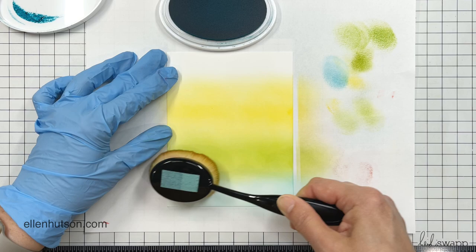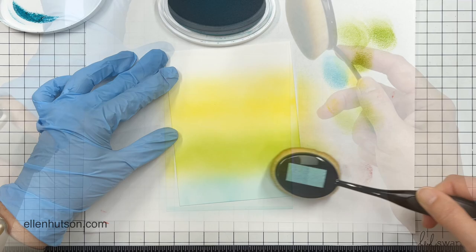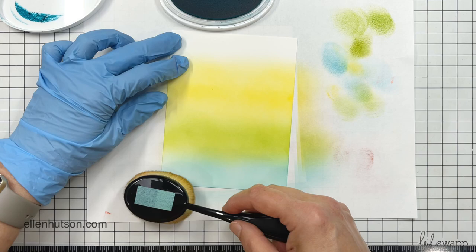I'm working towards the upper third portion of my quarter sheet of Neenah solar white. This is 80-pound Neenah solar white. Then I came in with my other colors.